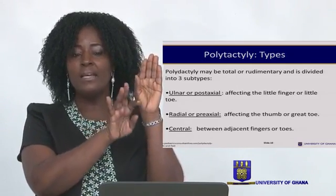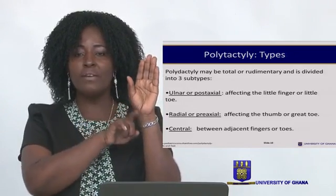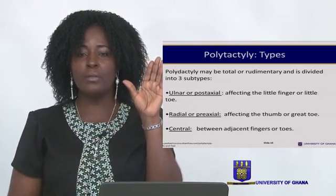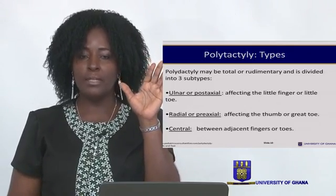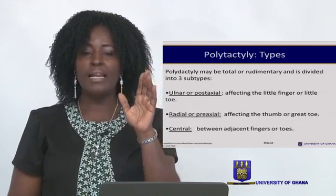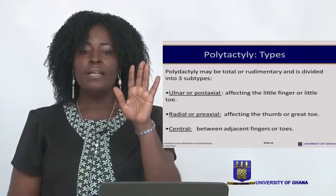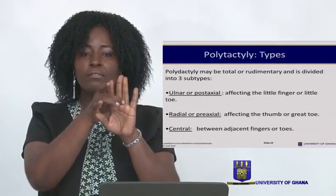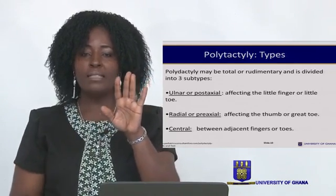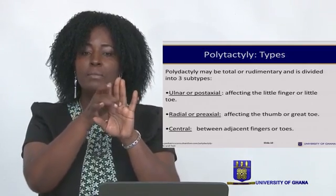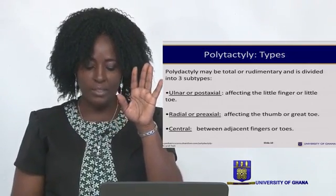The radial or pre-axial subtype affects the thumb, or if it involves the foot, the great toe. Then there is the central type, where the fusion or extra digits occur at the middle, between the adjacent fingers of the hands or toes.